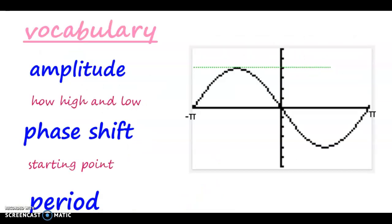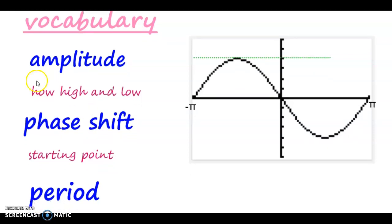All right, we got some words that you need to know, parts of the graph. So one part of the graph is called the amplitude. The amplitude is how high it goes. You can see this dotted line here is up at one, two, three, up at four. So the amplitude would be four, and it would then go down to negative four.